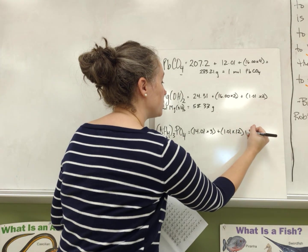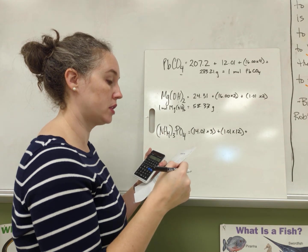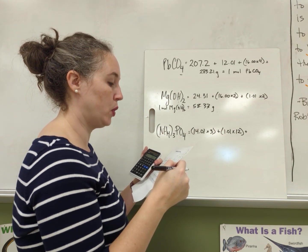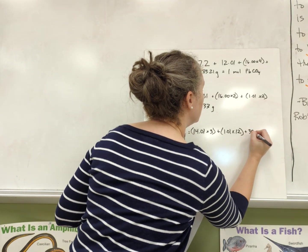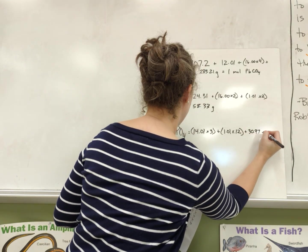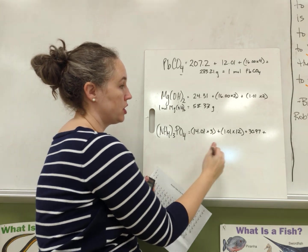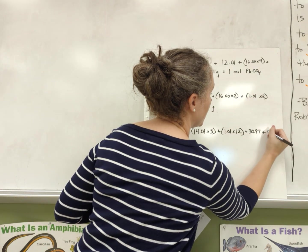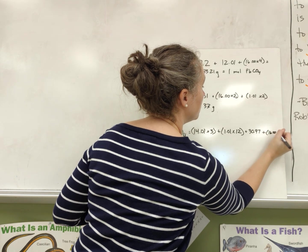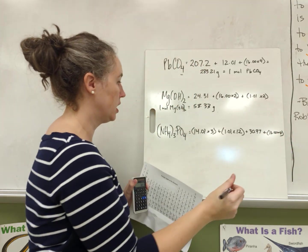Then we have 1 phosphorus. Phosphorus is 30.97. And then 4 oxygens again, so that's 16.00 times 4, which will be 64.